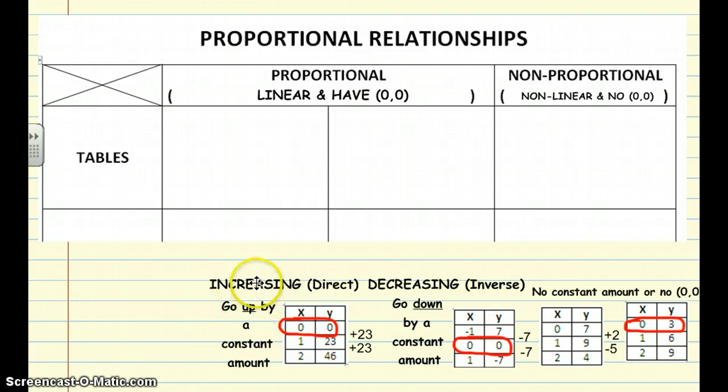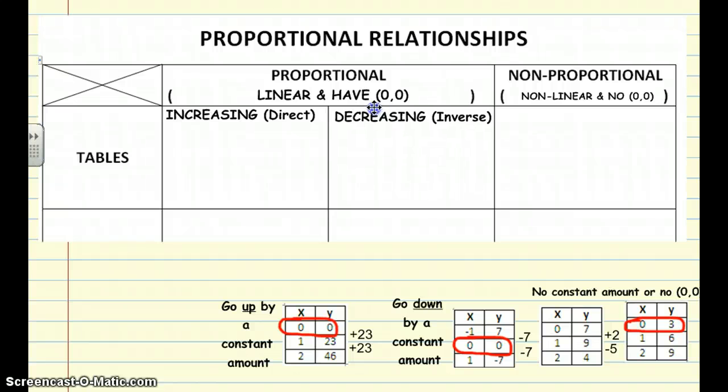So if we take a look at specifically proportional, we can say that they are either increasing or direct, or decreasing and inverse. So it's one of those two things. So what's the difference? First of all, increasing, as the name of it might imply, goes up by a constant amount. Constant meaning the same thing from one value to the next.